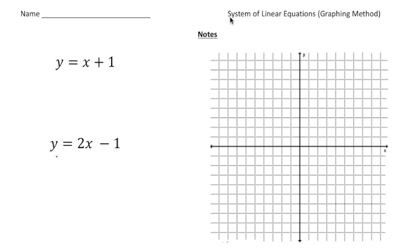The graphing method sounds just like it sounds — you graph the equations. I'm going to pick a blue color here and graph the equation y equals x plus 1. The y-intercept is at 1 and we have a slope of 1.